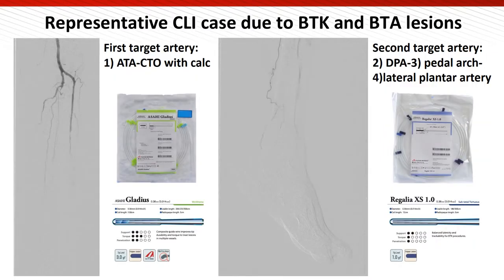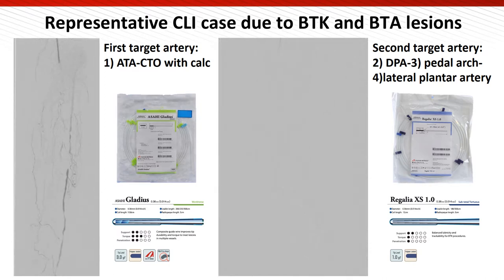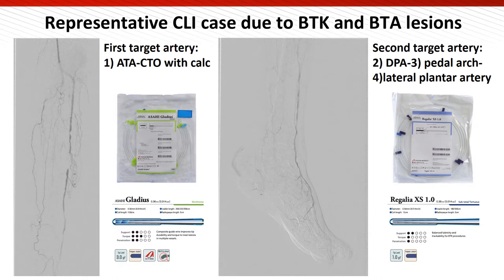Here is a representative case involving both BTK and BTA lesions. The first step is to cross a short segment CTO with calcification at the middle part of the ATA. The second step is to cross a long diffuse below-the-ankle CTO with less calcification.